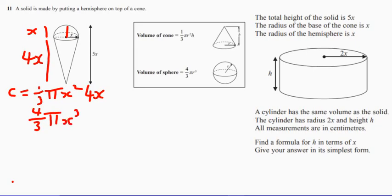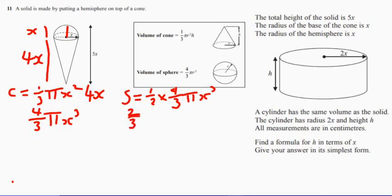Now let's think about the sphere as well. It's not a sphere, it's a hemisphere. So the first thing is it's going to be one half multiplied by four thirds pi x cubed. One half times four thirds is two thirds, so we've got two thirds pi x cubed.